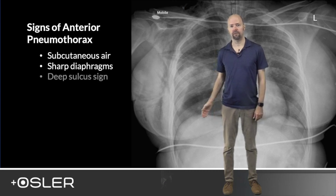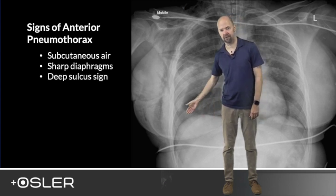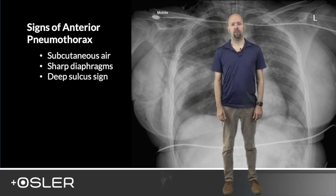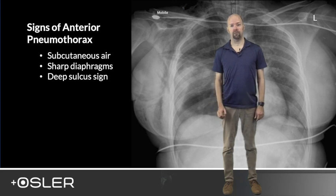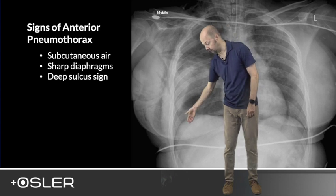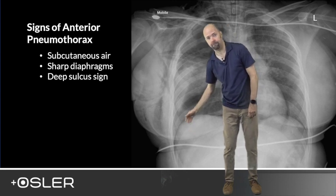Thirdly, look for the deep sulcus sign. The normally well-defined costophrenic angles are not well seen, and the sulcus just seems to keep disappearing down forever.